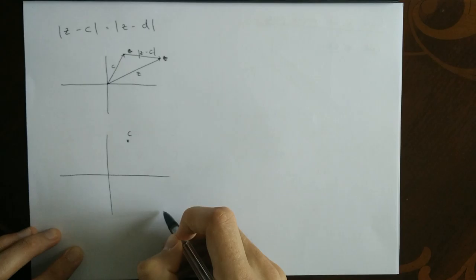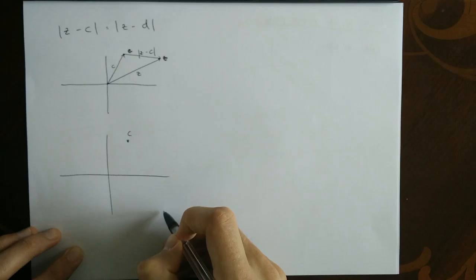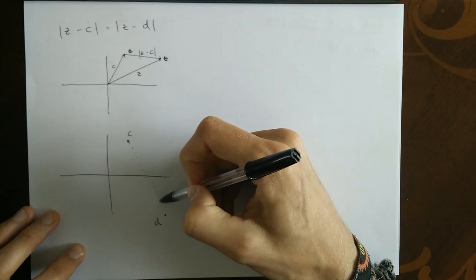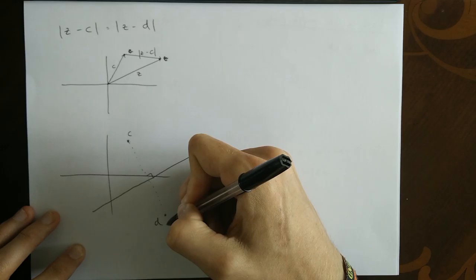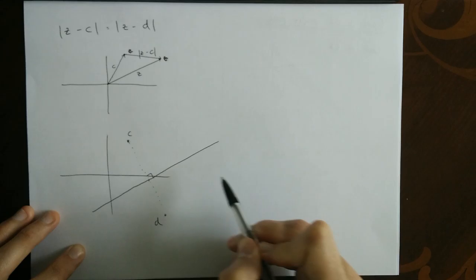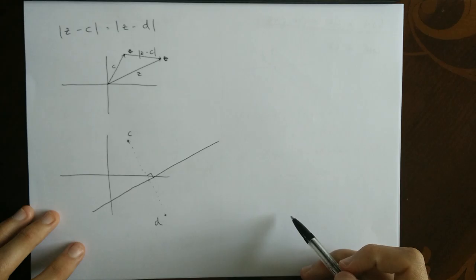So, let's just draw the point c on again, and draw the point d on. And I said that the answer was going to be the perpendicular bisector of c and z. As in, draw the line between c and d. Sorry, perpendicular bisector of c and d. Draw the line between c and d. Go halfway. Draw the perpendicular line. All these points I said would be equally spaced from c and d.